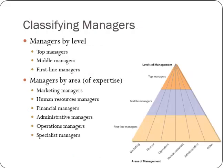Let's look at managers by level — classifying managers. You have top managers, middle managers, and lower managers. The people at the lower end of the company are typically individual workers who aren't managers at all. AT&T in the old days used to have eight levels of managers — a lot of level ones, fewer level twos, all the way up to level eight, of which there were only a handful. You can also classify managers by area: marketing, human resources, financial, administrative, operations, specialists.